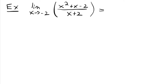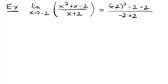Let's see what happens when we plug in negative 2. We have negative 2 squared minus 2 minus 2, all over negative 2 plus 2. On the top, we get 4 minus 2 minus 2, which is 4 minus 4, so that's 0. On the bottom, negative 2 plus 2 is also 0. So we have this indeterminate form, which means we're going to have to manipulate this function. We could try factoring to see if there's anything we can factor.